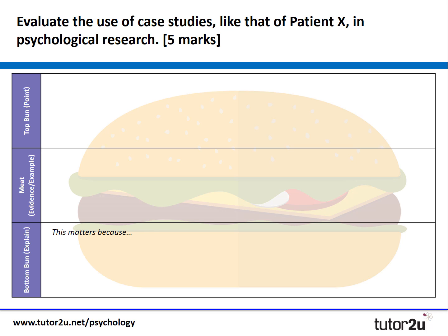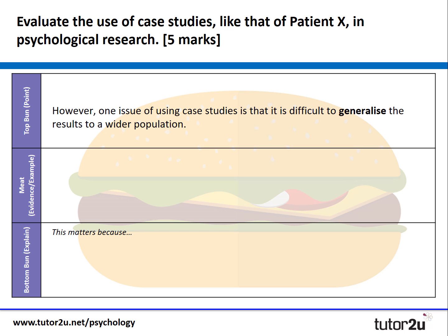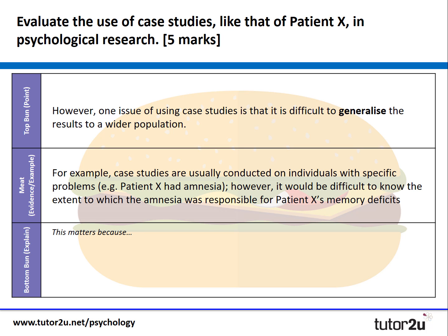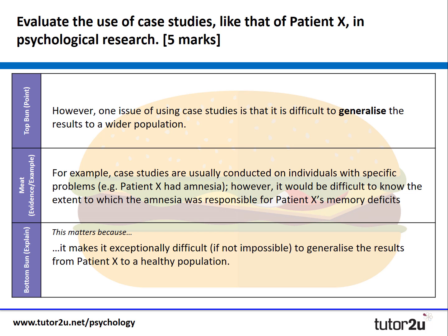Let's turn it round now and look at a limitation: generalisability. You might say: 'however, one issue with using case studies is that it's difficult to generalise these results to a wider population.' Again, contextualising that in the example: 'case studies are usually conducted on individuals with specific problems — for example, in this case patient X had amnesia — however it would be difficult to know the extent to which the amnesia is responsible for his memory deficits or other factors.' This matters because it makes it exceptionally difficult, and some psychologists say impossible, to generalise the results of patient X to a healthy population.